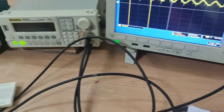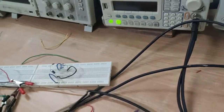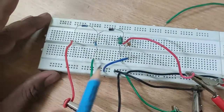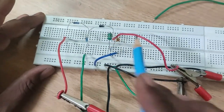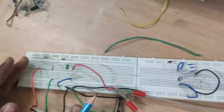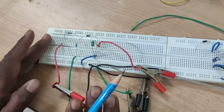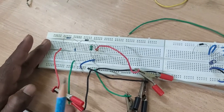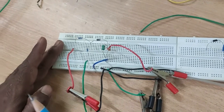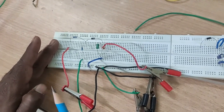Practically, the same circuit is connected on the breadboard. This is the modulator circuit diagram and this is the demodulator circuit diagram. In this modulator, two signals are given as input: one is the modulating signal and the other is the carrier signal. Both the modulating signal and carrier signal are taken from the function generator.